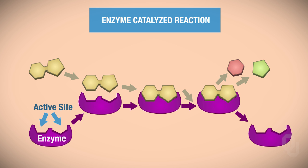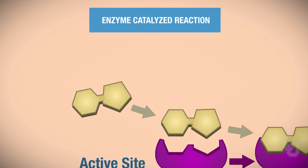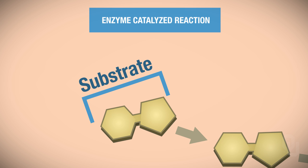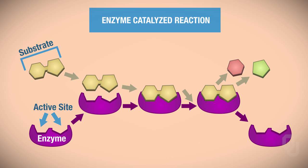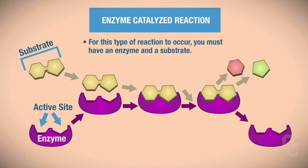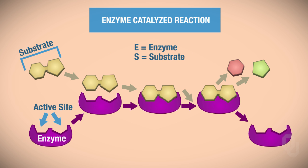The other thing that you need for an enzyme-catalyzed reaction to occur is a substrate. So here we have an example of a substrate. For this enzyme-catalyzed reaction to occur, you must have an enzyme and you must have a substrate, which we'll abbreviate with an S. So when the enzyme and the substrate come together — in other words, the substrate binds to the active site on your enzyme — that will form what's called the enzyme-substrate complex.